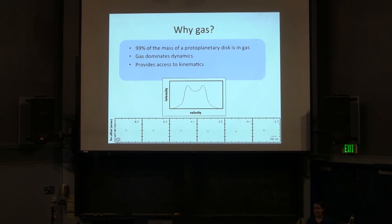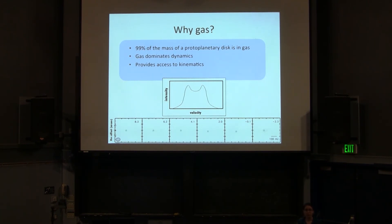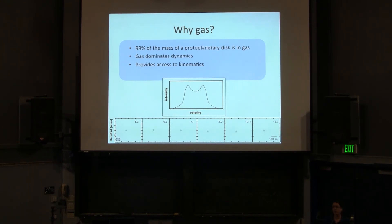Gas provides access to kinematics. With dust you get a lot of emission — it dominates the opacity of the disk — but you can't tell how it moves. You need gas lines to provide access to the Doppler shifts that give you kinematic information about what's happening in the disk. Here I've created a cartoon of the intensity as a function of velocity of a protoplanetary disk, showing how we use gas lines to tell us about motion.